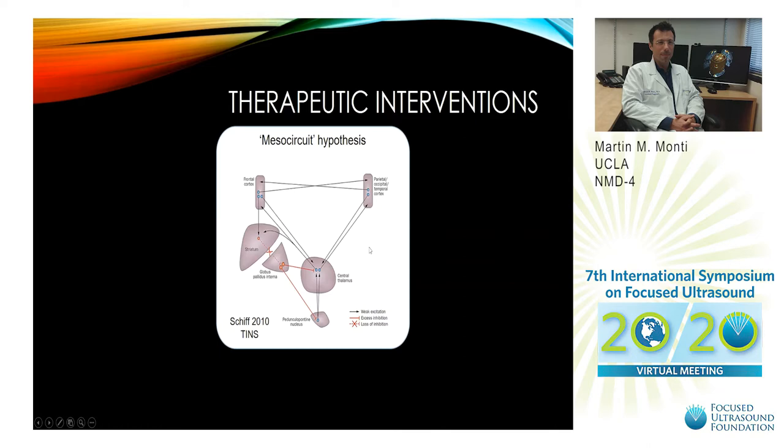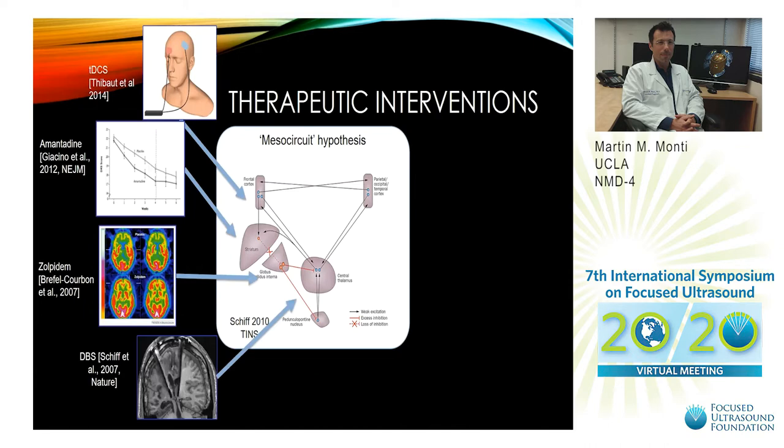Many interventions that have been attempted target various nodes of this circuit. Deep brain stimulation in particular has shown very promising results; however, both in acute and chronic patients the rates of patient exclusion are very high due to the inability to undergo the surgery, excluding between 80 to 87 percent of evaluated patients.